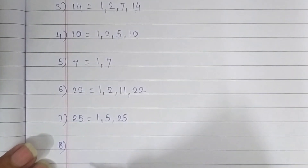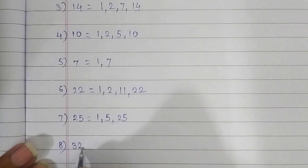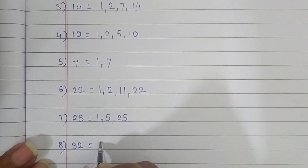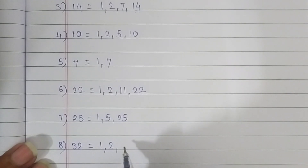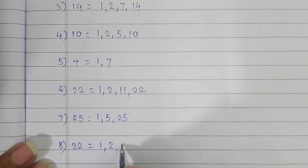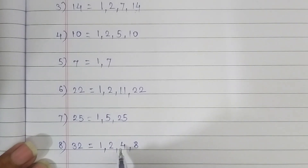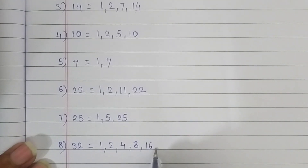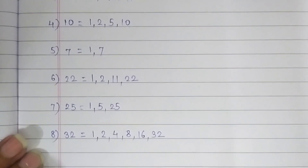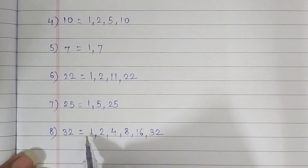The 8th question is 32. We have to find the factors of 32. The first factor is 1. The second factor is 2 — 2 sixteens are 32. Then it comes in the 4 times table: 4 eights are 32. And the 8 times table: 8 fours are 32. Then it comes in the 16 times table, and the 32 times table. The factors of 32 are 1, 2, 4, 8, 16, and 32.